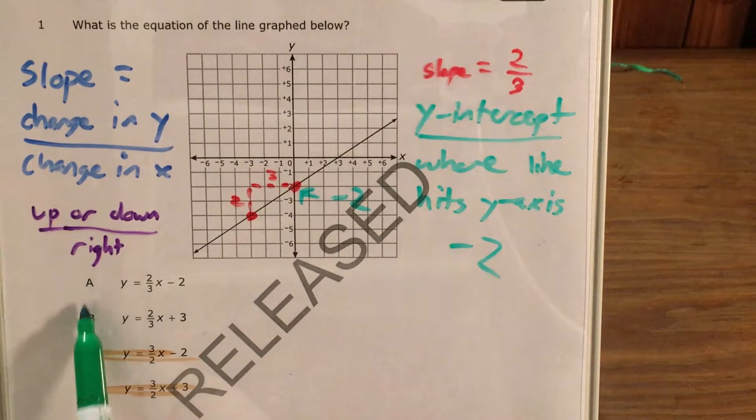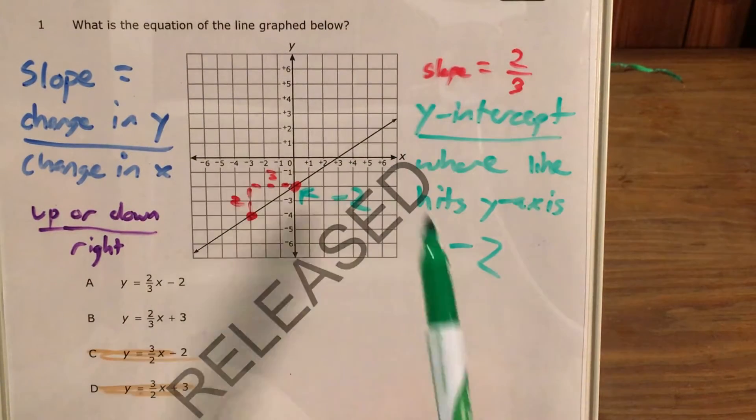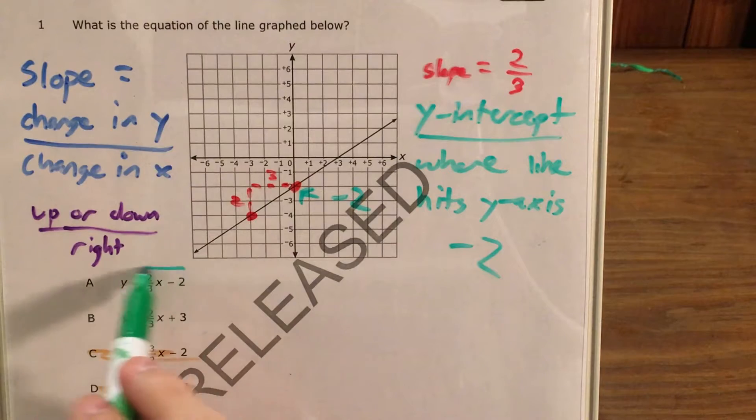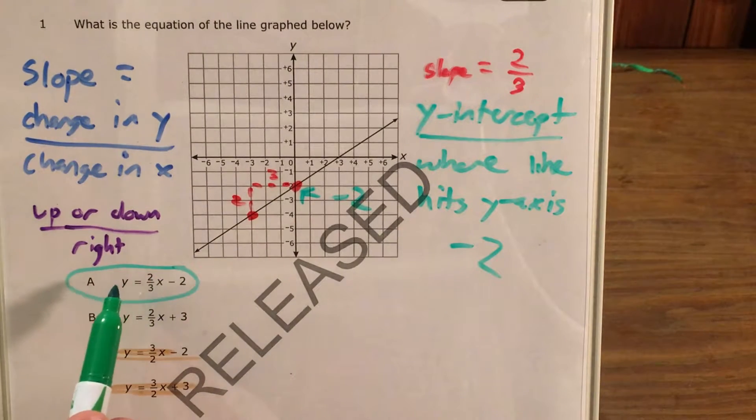Which means that I'm looking for my answer choice that has a slope of two-thirds and a y-intercept of negative two, and that's this one, choice A: y equals two-thirds x minus two.